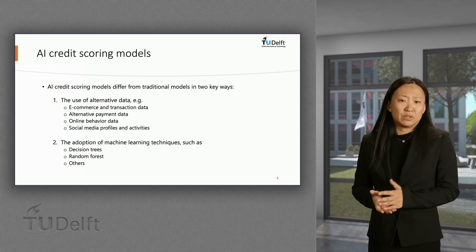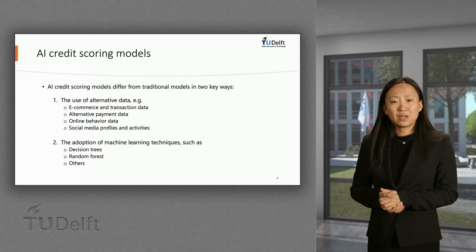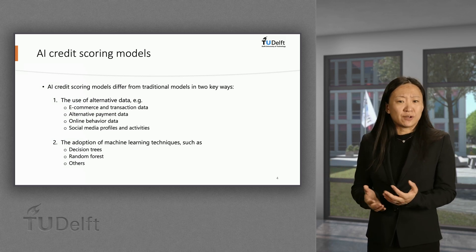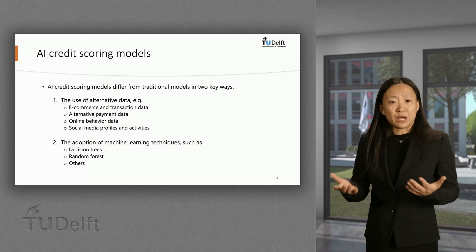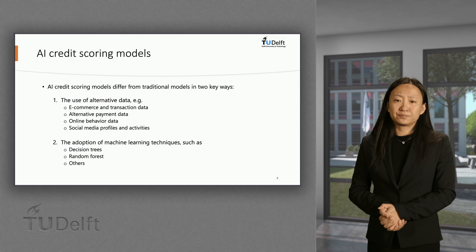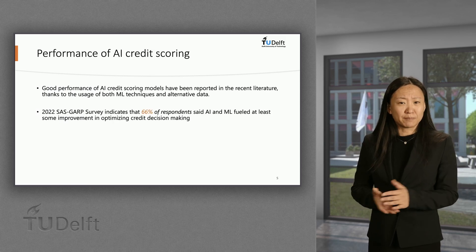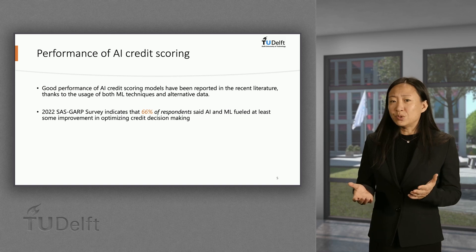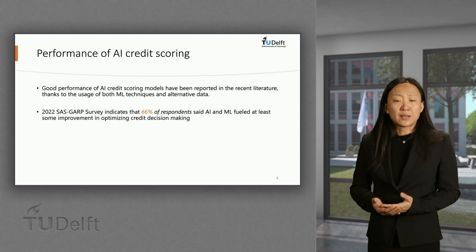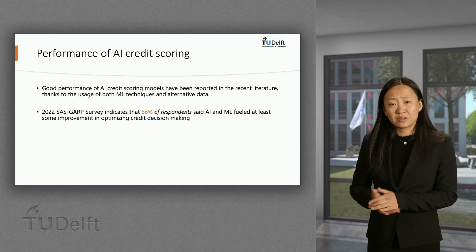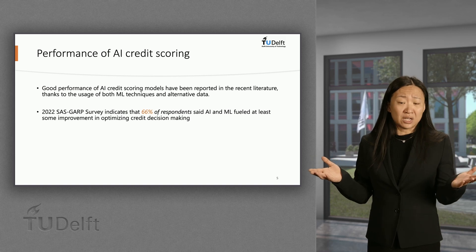Alternative payment data, such as utility and telecom payments and rental payments, online behavior data, such as the usage of digital applications on mobile phones, and social media profiles and activities. A few papers have reported good performance of AI credit scoring models compared to traditional ones, thanks to the usage of both machine learning techniques and alternative data.